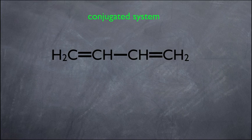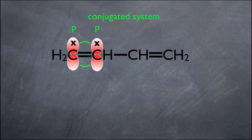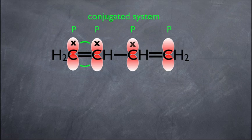Let's remind ourselves what's happening at an orbital level. Each carbon in the conjugated system is sp2 hybridized, which means each one has an unhybridized p orbital, and each unhybridized p orbital has an electron in it. Those electrons are sideways overlapping to make the pi bond — that's the truth behind every pi bond: two p orbitals sideways overlapping.